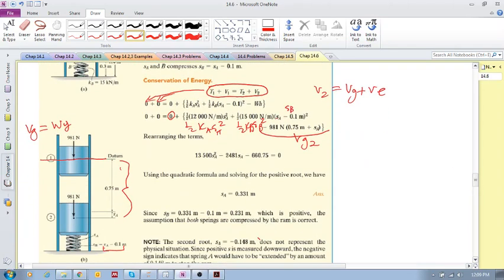The total thing needs to be squared, and then you get this equation. Solving for sa we get two roots: sa equals 0.331 and sa equals -0.148. We have to choose 0.331 because it's not possible for sa to move upwards, only down, so down is positive.